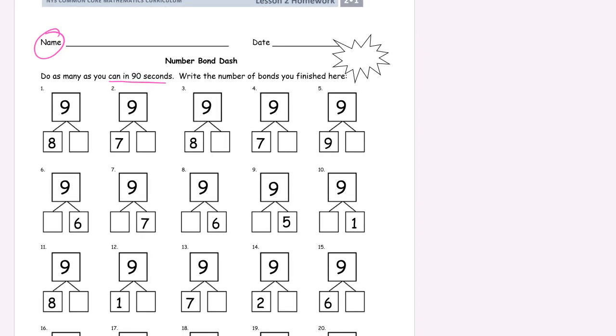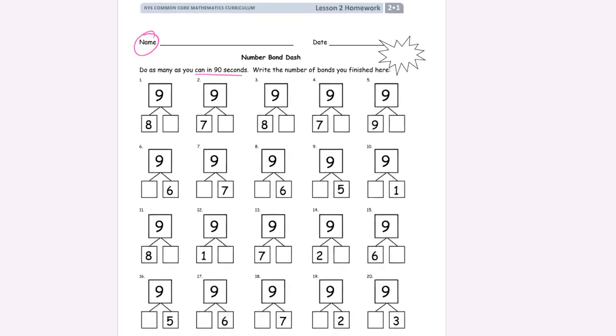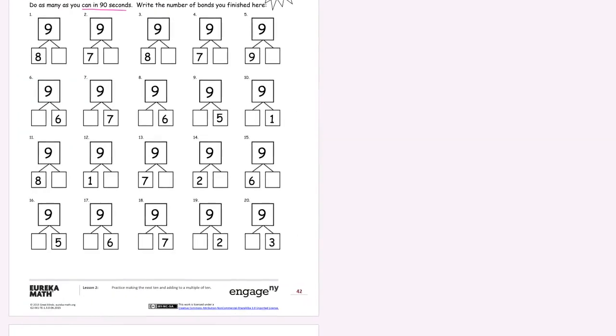And here you're just looking for, these are just all ways to make nine. Right. So I'll just write in some of the answers here so you can check them when you're done. Right. Eight and one, seven and two, eight and one, seven and two, nine and zero, three and six, two and seven, three and six, four and five, eight and one, eight and one. Now I'm just writing these in so you can check them.